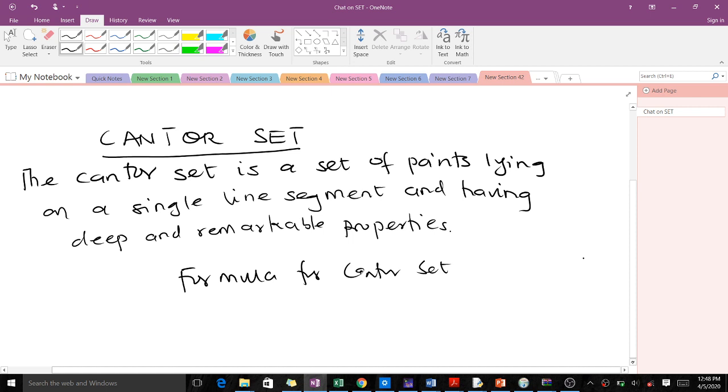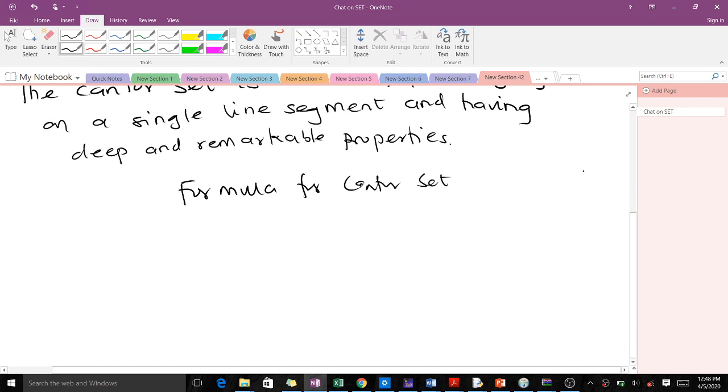We will learn the generation method. When we are generating the formula for the Cantor set, what we do is take the closed interval [0,1] and divide it into 3 equal parts, and then we find what we call the middle third.